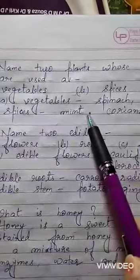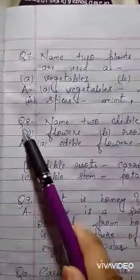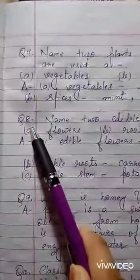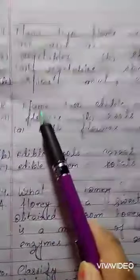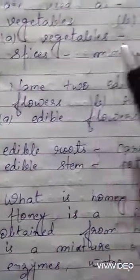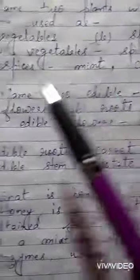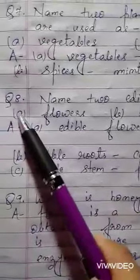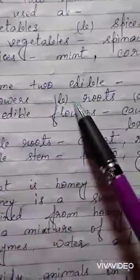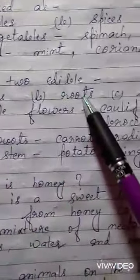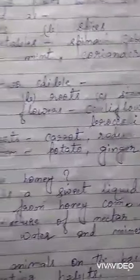I hope you all have understood. Now come to the next question: Question number 8. Name two edible — Point A: Flowers. Point B: Roots. Point C: Stem.